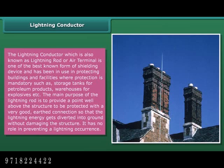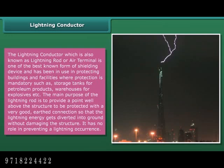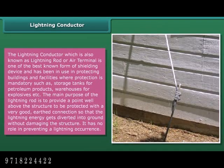The lightning conductor, also known as a lightning rod or air terminal, is one of the best known forms of shielding device. It has been used in protecting buildings and facilities where protection is mandatory, such as storage tanks for petroleum products and warehouses for explosives. The main purpose of the lightning rod is to provide a point well above the structure with a very good earth connection so that the lightning energy gets diverted into the ground without damaging the structure. It has no role in preventing a lightning occurrence.